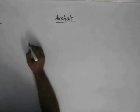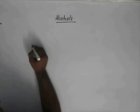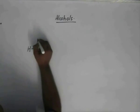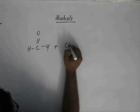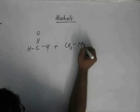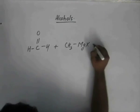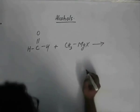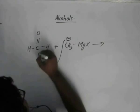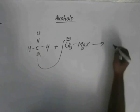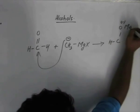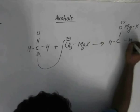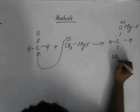Let's work through some questions. If we have formaldehyde and CH3MgX, the nucleophile attacks the nucleophilic center, and we are left with HO-MgX and HCH3.